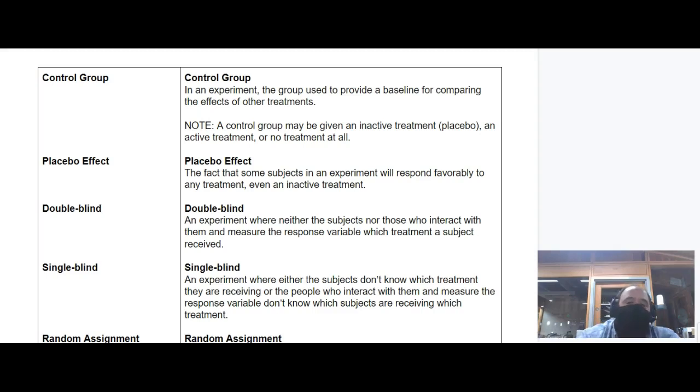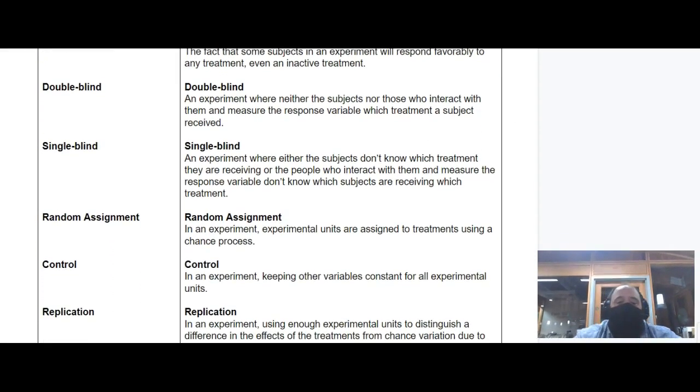A good structure for an experiment is double-blind, which means that both the subjects being treated and the person doing the measuring have no idea who is getting which factors of the treatment. Single-blind is not as strong but can be effective - either the subjects don't know what factor they're being given, or the person watching the response variable doesn't know. You're either blinding the subject or blinding the measure.